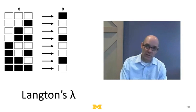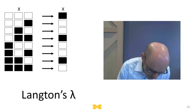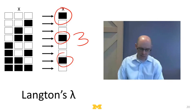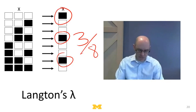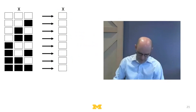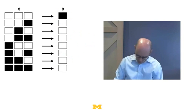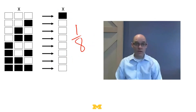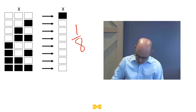Wolfram numbered these rules from one to 256. Langton takes a much simpler approach — he just asks: how many things go on? In a particular rule, if three of the eight outputs are 'on,' you can think of Langton's lambda as three-eighths. It's simply the percentage of the number of switches that are on. So a rule where nothing goes on has lambda zero over eight, and a rule where one thing goes on has lambda one over eight.